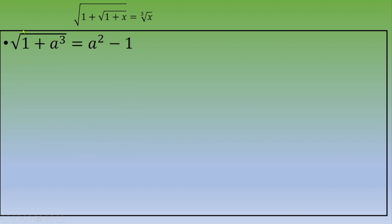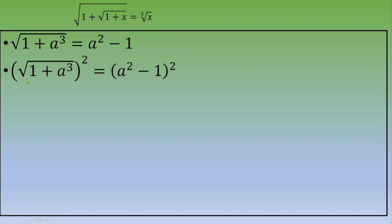We repeat the same process and raise both sides to the second power again. We get: 1 plus a cubed equals (a squared minus 1) squared.